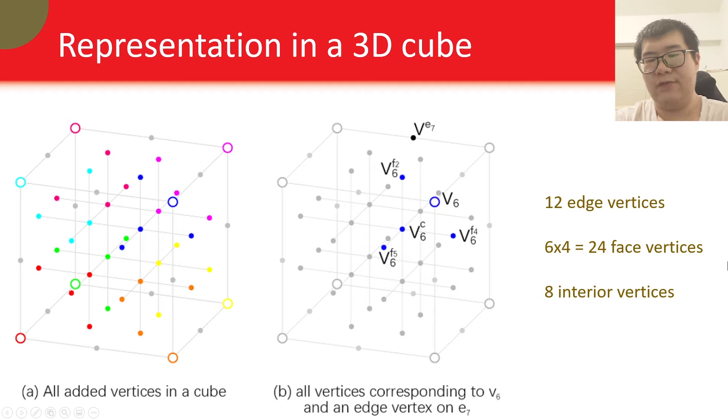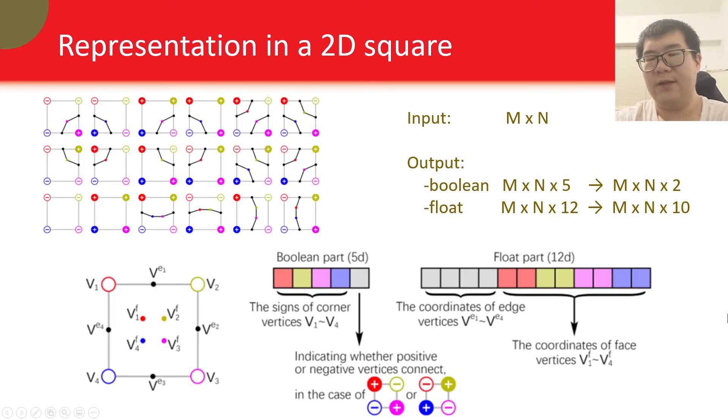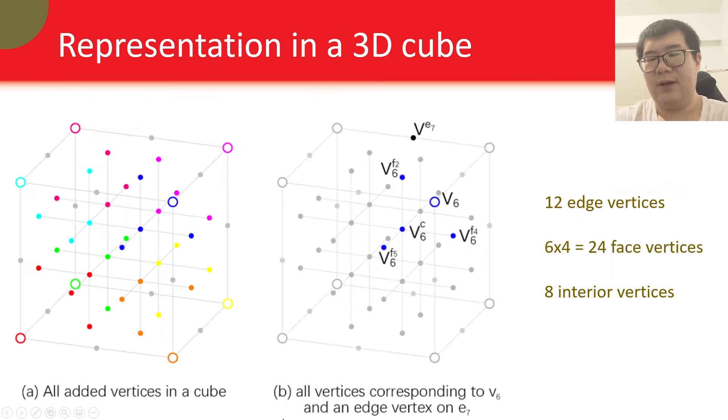We have one edge vertex for each edge, so 12 edge vertices. There are 6 faces, and each face has 4 face vertices, so 24 face vertices. Also, for each of the corner vertices, we introduce a corresponding interior vertex, just like those in 2D. So we have 8 interior vertices, and that's all. Note that the face vertices and the interior vertices have correspondences with the corner vertices, just like those in 2D.